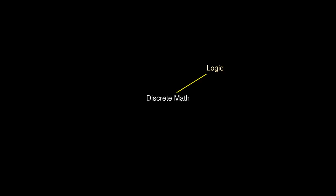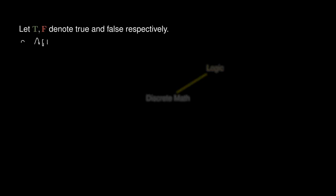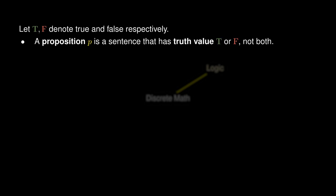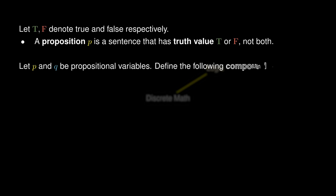The fundamentals of discrete math are propositional and predicate logic. Mathematics is all about statements or propositions that are true or false. When we combine these expressions together to form compound expressions, they have various combinations of truth values.